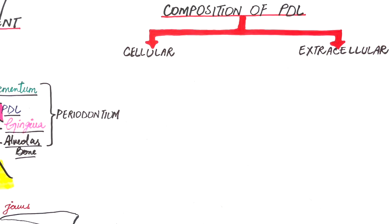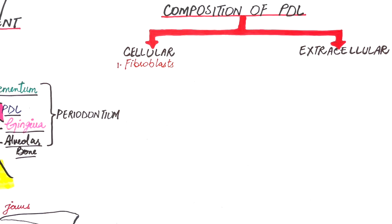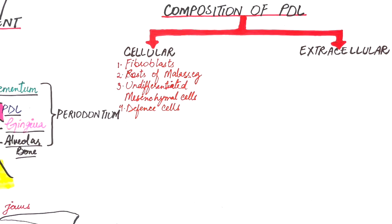The main cells in the cellular component are the fibroblasts, which make the collagen fibers of the PDL. Other cells present are the epithelial rests of Malassez, the undifferentiated mesenchymal cells, and some defense cells.